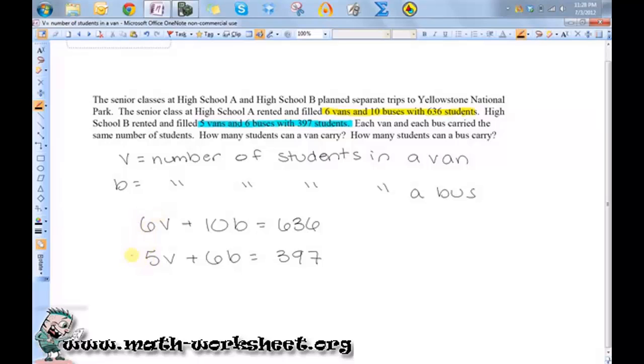Also, one needs to be negative and one needs to be positive. So when you add them up, they equal zero. So I'm going to multiply the top one by negative 5 and the bottom one by positive 6.